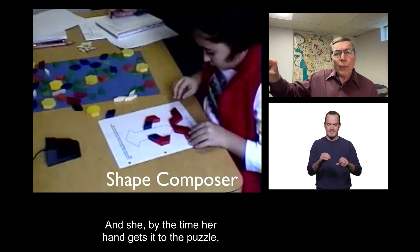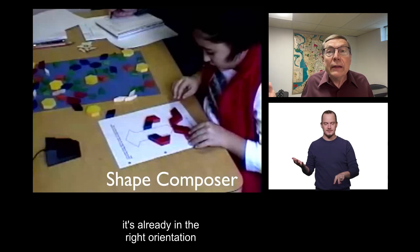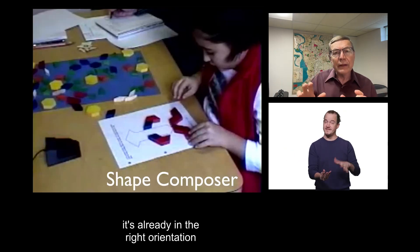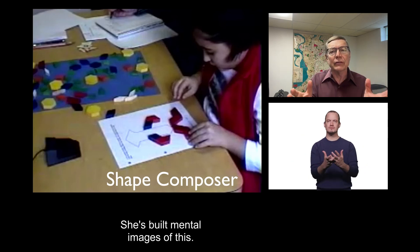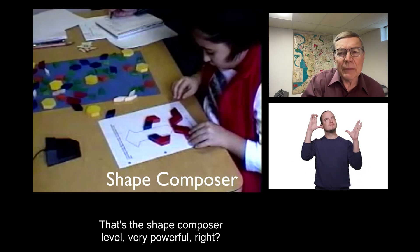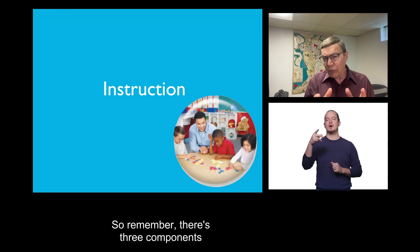And by the time her hand gets it to the puzzle, it's already in the right orientation and the right position. She's built mental images of this. That's the shape composer level. Very powerful.